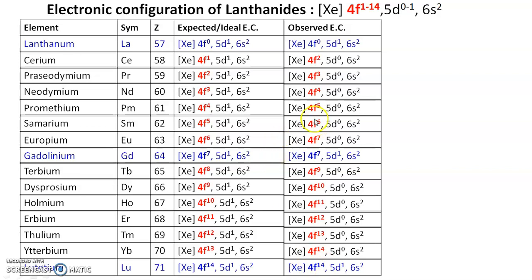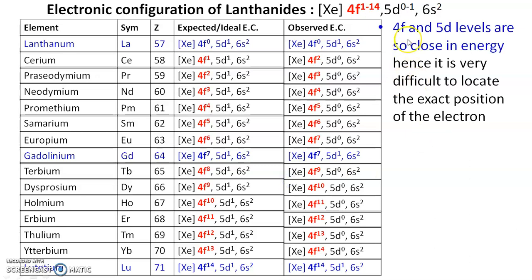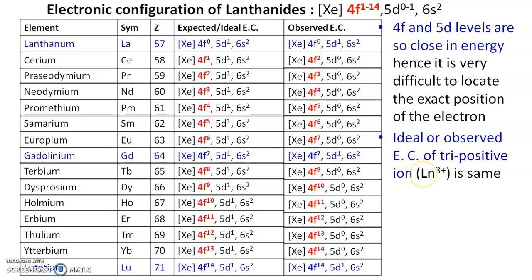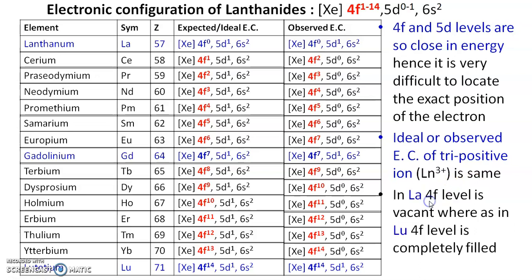For lutetium, the expected and observed configurations are the same — the incoming electron enters the d orbital. These are the expected and observed configurations from lanthanum to lutetium. Key points: 4f and 5d levels are so close in energy that it is very difficult to locate the exact position of an electron. The ideal and observed electronic configuration of the tri-positive ion (Ln³⁺) is the same. In lanthanum the 4f level is vacant, whereas in lutetium the 4f level is completely filled.